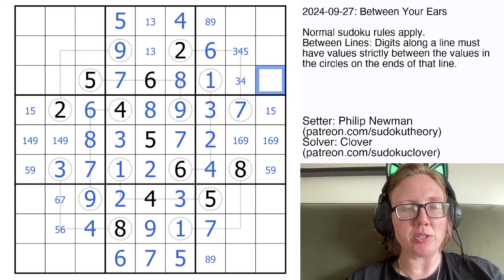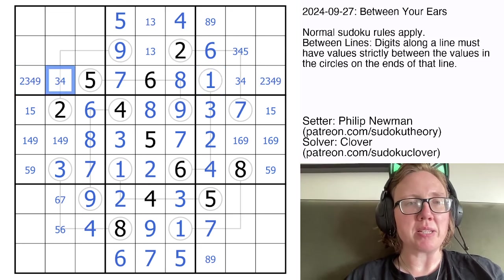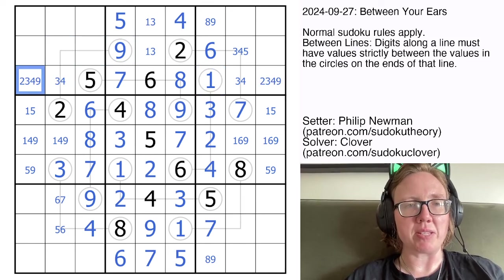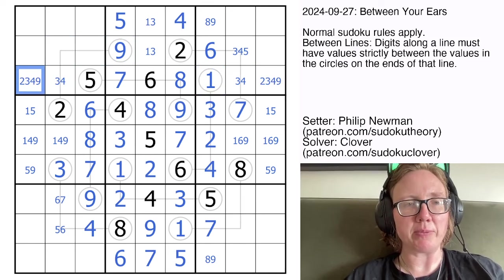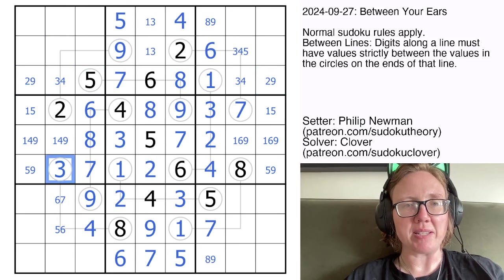So now these need to be 2, 3, 4, and 9. This can't be 2 and 9 because those are already the two endpoints, so that gives us a 3, 4 pair in the row, and we can eliminate 3 and 4 here. And of course, that 3 makes this a 4 and makes this a 3, so that's resolved.